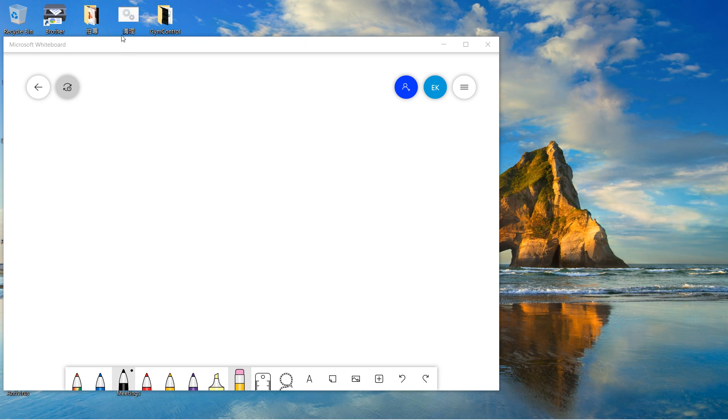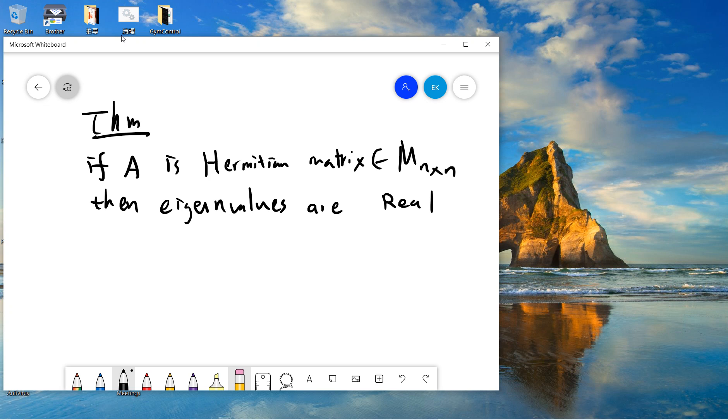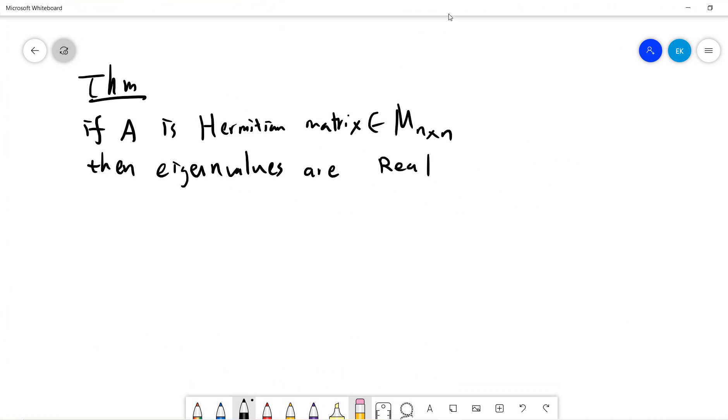Guys, so today we prove a simple theorem. The theorem says if A is a Hermitian matrix, it should be n by n, then eigenvalues are real.